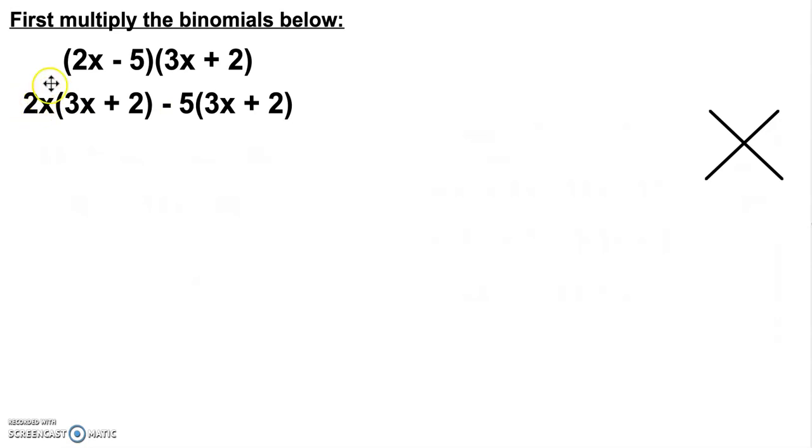We would distribute the 2x to the second binomial and the negative 5 to the second binomial. When we finish distributing, I'd get 6x squared plus 4x minus 15x minus 10. Then I combine the middle terms to be 6x squared minus 11x minus 10.